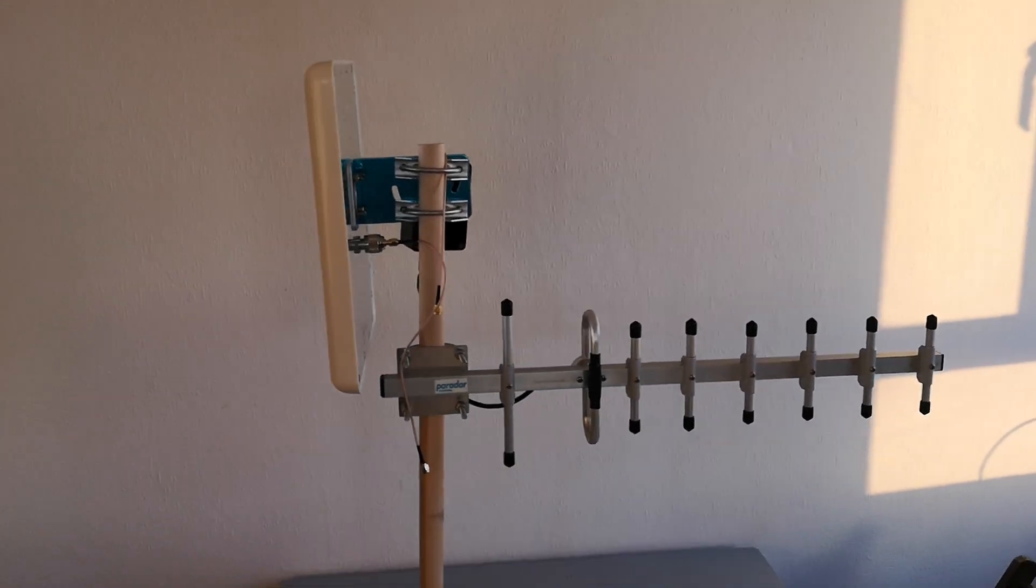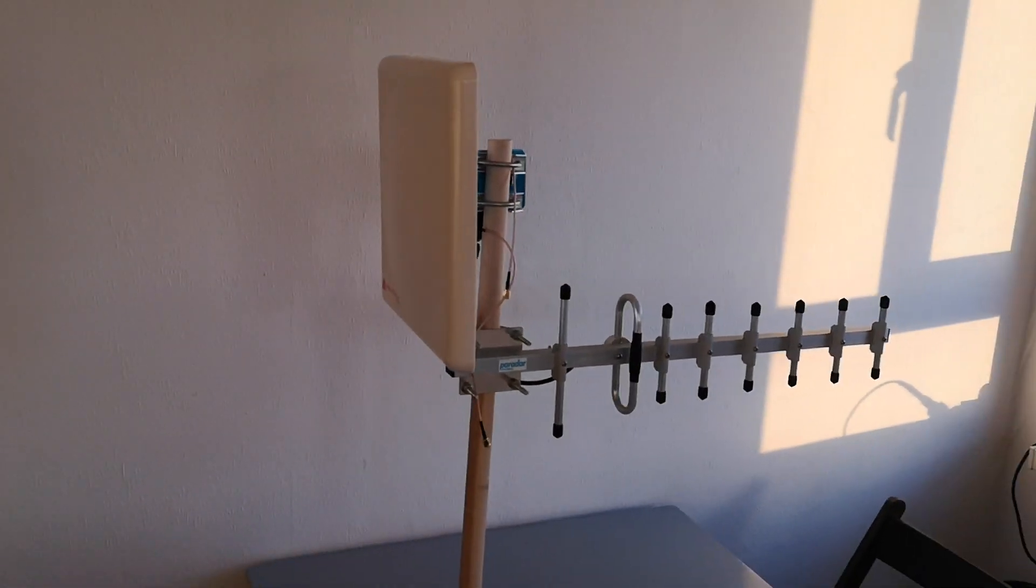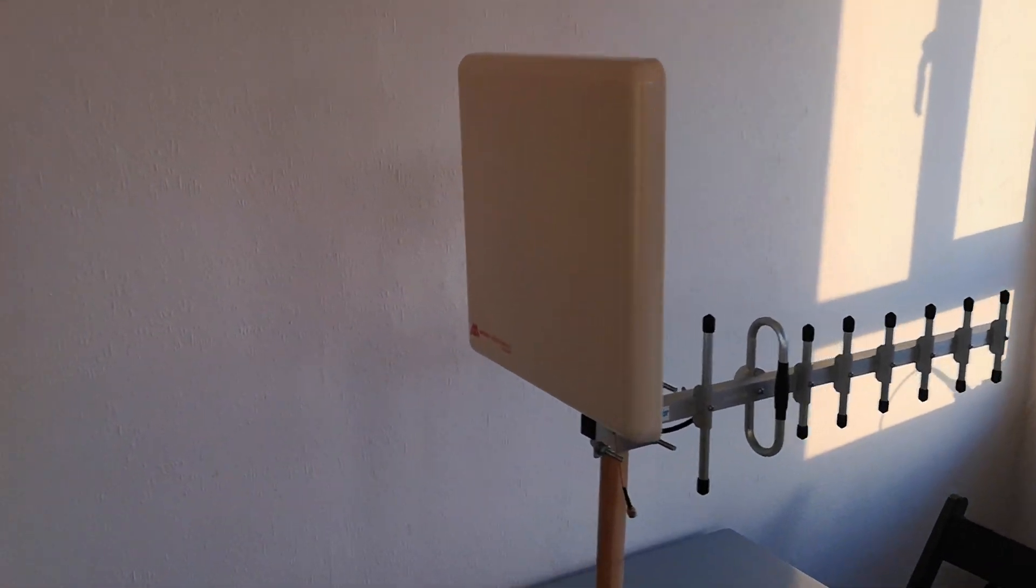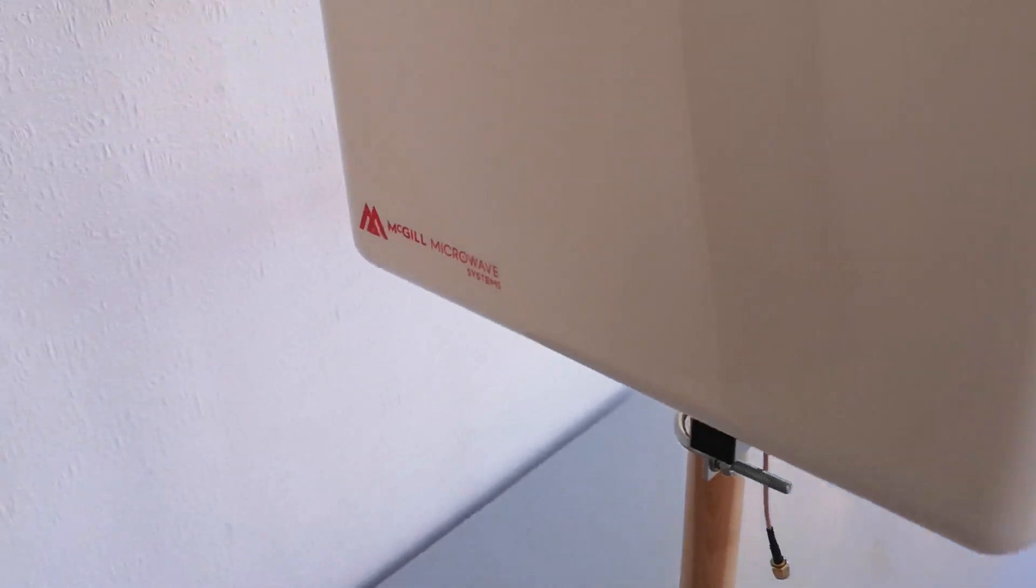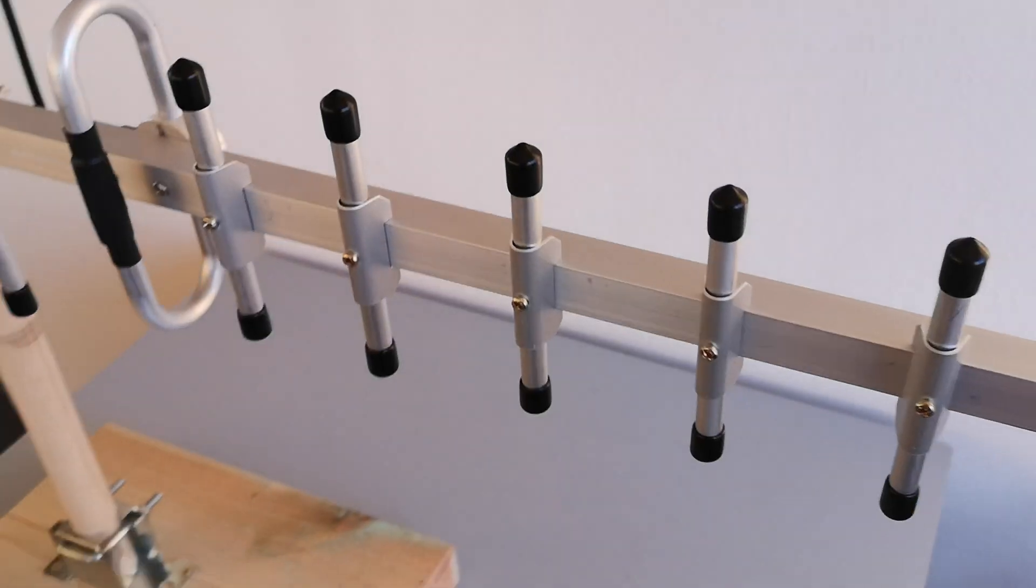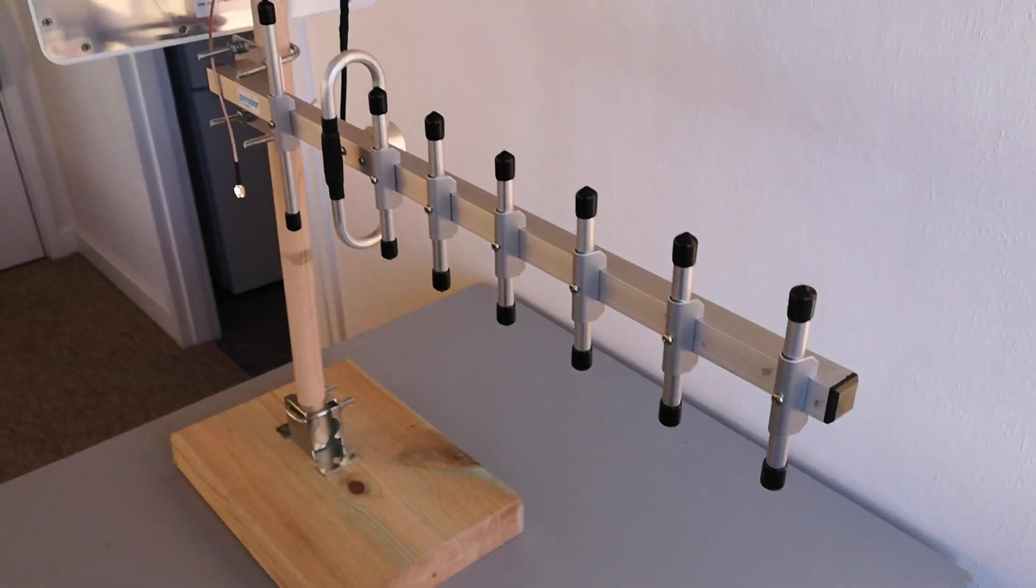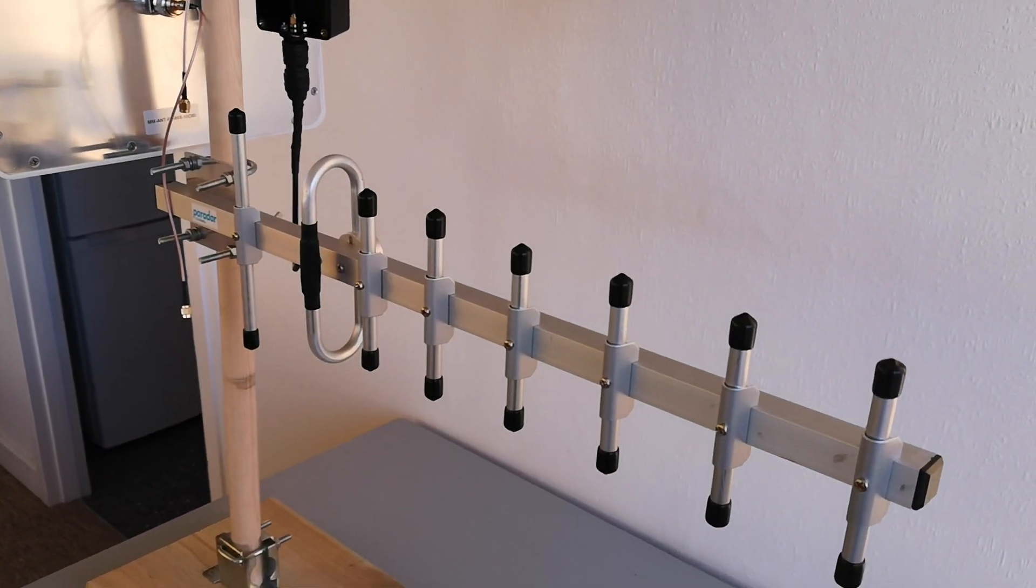Hello and welcome to my channel. This is the second video in this series comparing these two antennas, the McGill Microwave Flat Panel 10 dBi antenna and the Parada 8 element 12.5 dBi Yagi.